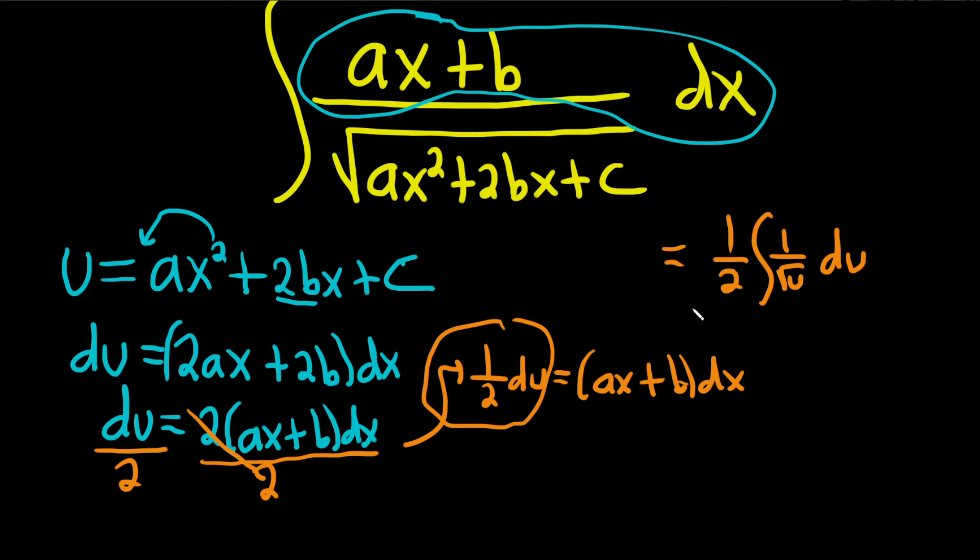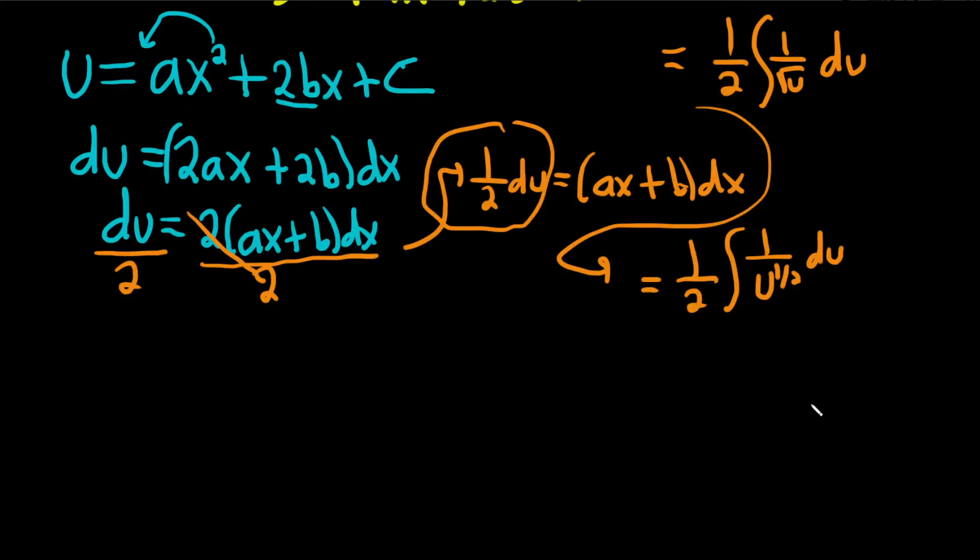Alright, the rest of this shouldn't be too bad. Let me just come down here and get some more room. We can write the square root of u as u to the 1 half. That's a good first step. And then we can bring it upstairs and it becomes negative.